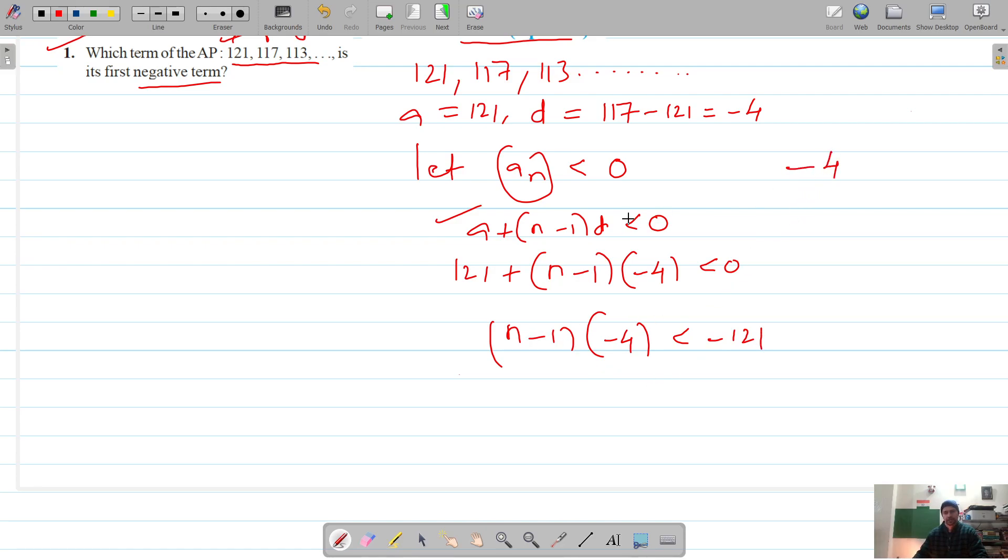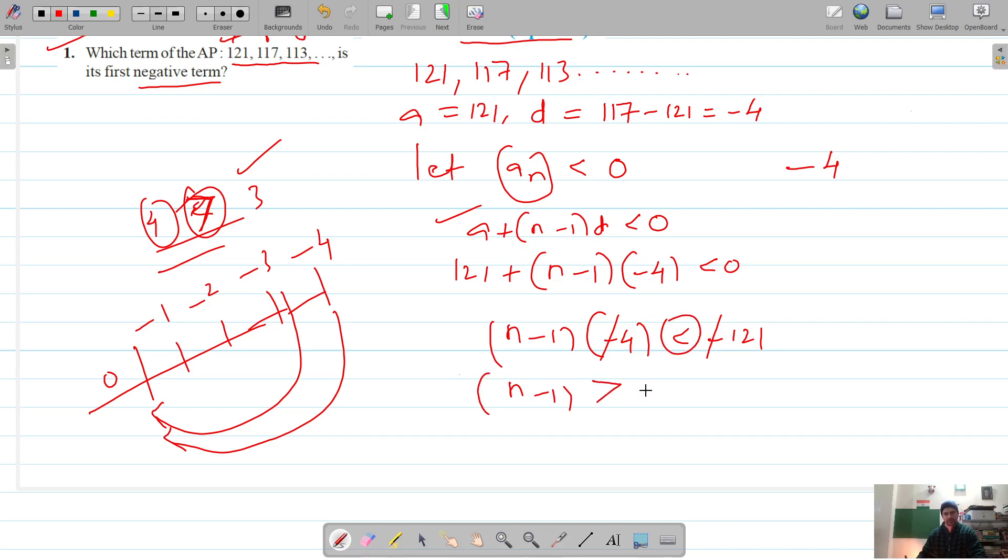Now, we know that out of minus 3 and minus 4, minus 3 is greater because minus 3 is closer to 0 compared to negative 4. But when we remove the negative sign, 4 is greater. So this sign changes—the inequality changes. When we take off the minus sign from here, the sign of inequality changes, it's now greater than, and it's 121.